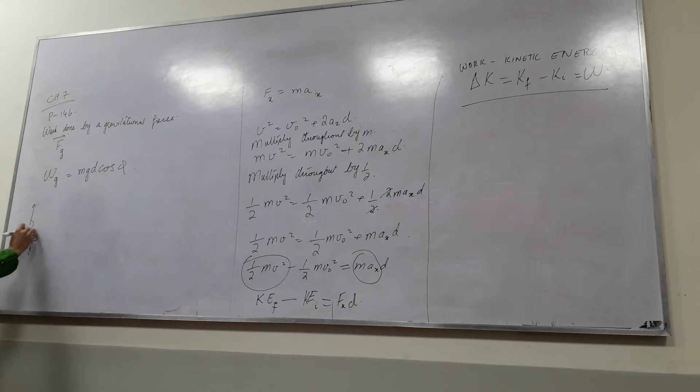then we can have the angle between these two. What will be the angle between these two? If the Fg force is downwards and the displacement is upwards, then the angle is 180 degrees.